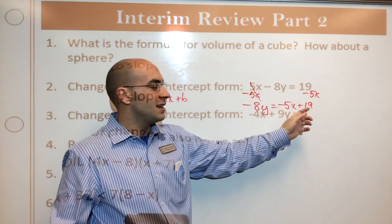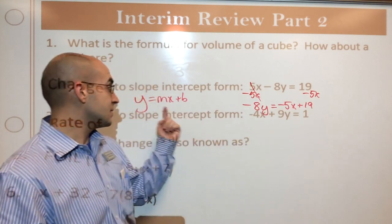So I'm just going to put it over there. What I'm left with here is negative 8y equals negative 5x plus 19. And please keep in mind, I want you to keep the term with the x next to the equal sign. If you put it over here, that's not mathematically incorrect, but that's not slope-intercept form, right? This is slope-intercept form, okay?